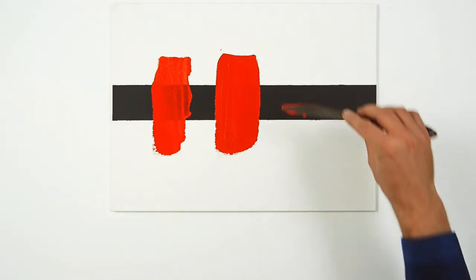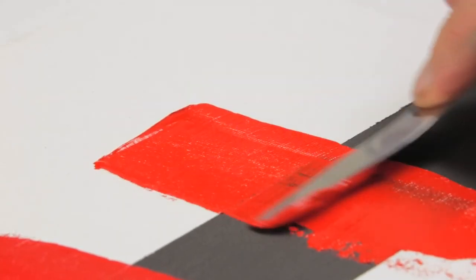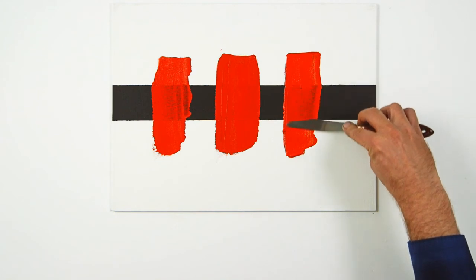By diluting this cadmium red with a medium, I have pushed the pigment particles apart, allowing light to pass between them and creating the effect of transparency.